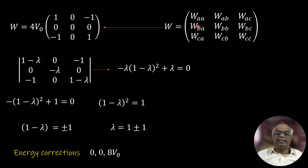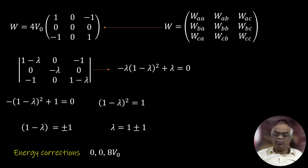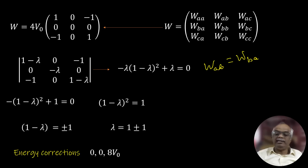We can now write the W matrix. Since the sine functions are real, W is Hermitian (wpa = wap, etc.). The matrix has diagonal entries waa = 4V₀, wpp = 0, wcc = 4V₀ and all off-diagonal cross terms wap = wac = wpc = 0. Factoring out 4V₀, the diagonal becomes (1, 0, 1) with off-diagonals all zero.